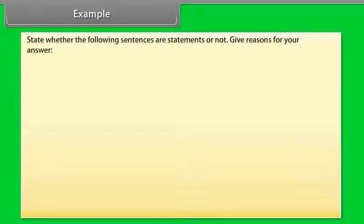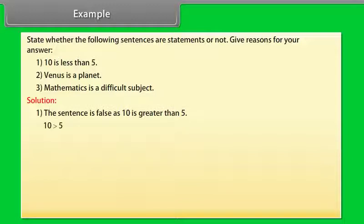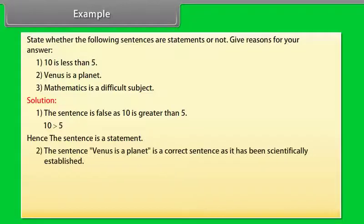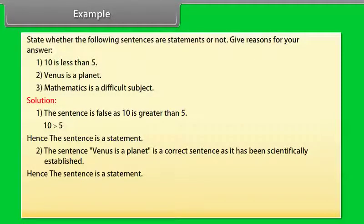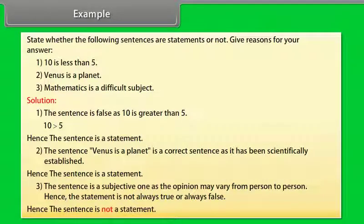Example: state whether the following sentences are statements or not, and give reasons. (1) 10 is less than 5 — this sentence is false, as 10 is greater than 5, hence it is a statement. (2) Venus is a planet — this is a correct sentence, as it has been scientifically established, hence it is a statement. (3) Mathematics is a difficult subject — this is a subjective sentence, as the opinion may vary from person to person; hence the sentence is not always true or always false, so it is not a statement.